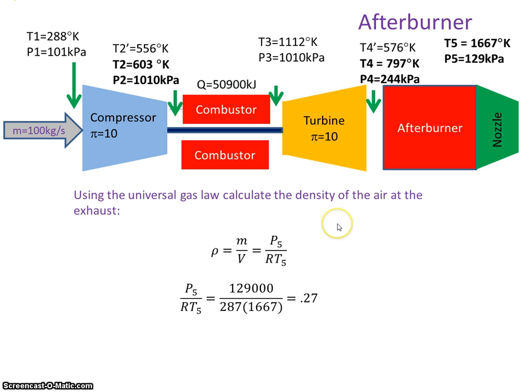Okay, I want to work out what the density of the air is. Well, from the ideal gas laws, the density is pressure over R times T. So I plug in the values, so at this point here it was 129 kilopascals. R is a constant of 287, and the temperature at the nozzle was 1667, which we just calculated. That gives me a density of 0.27.